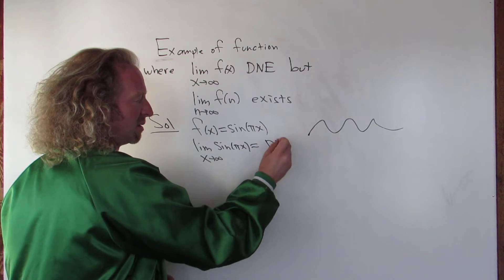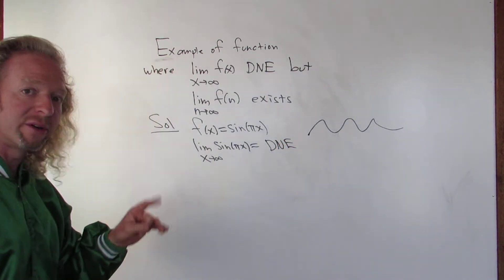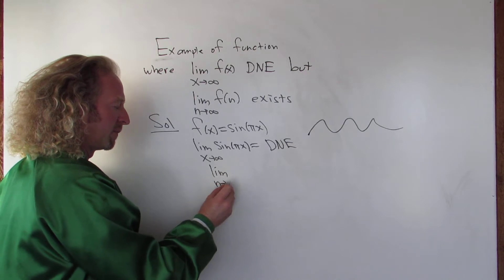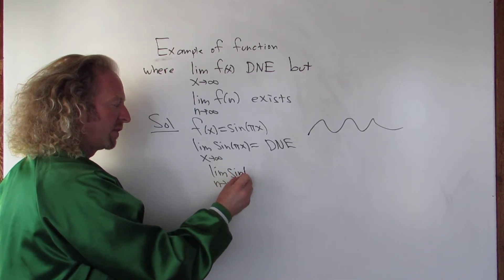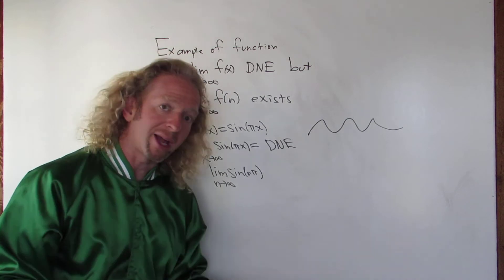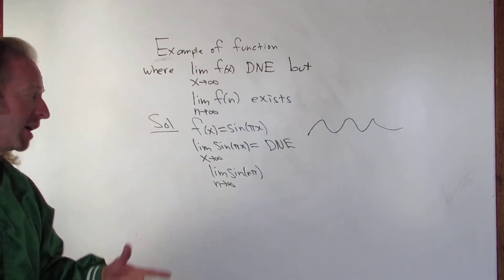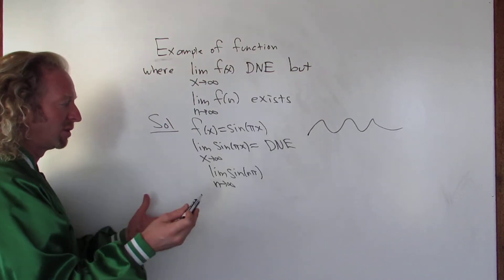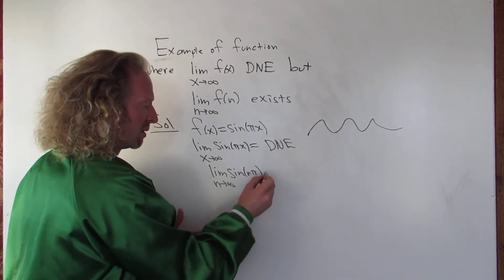However, if you replace x with an integer, something really interesting happens. Sine of nπ, well sine of nπ is zero. If you think about the graph of sine or the unit circle, this is always zero. So this is the limit as n approaches infinity of zero.